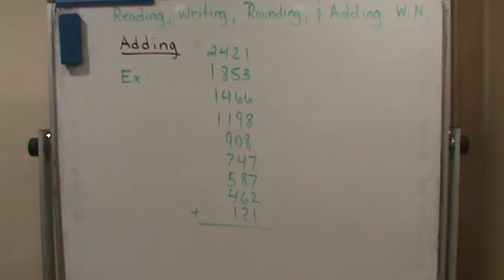First estimates were as follows: 2421 iron workers, 1853 carpenters, 1466 concrete contractors, 1198 electricians, 908 mechanical contractors, 747 stone and tile contractors, 587 elevator contractors, 462 plumbers, and 121 glaziers.